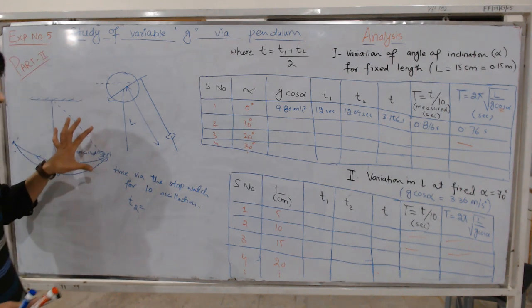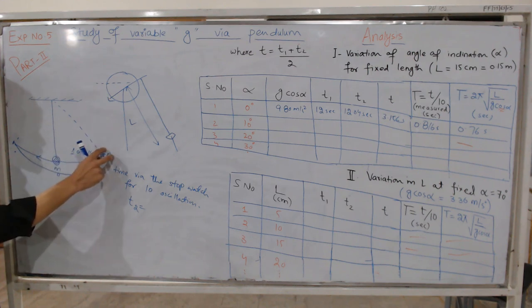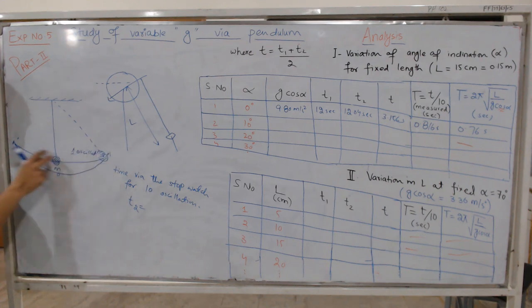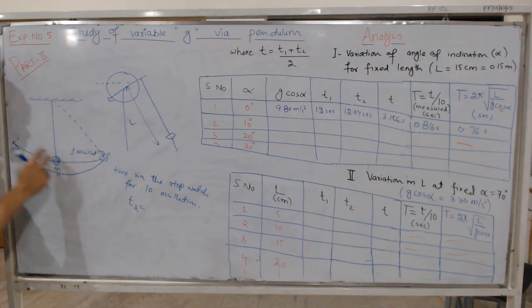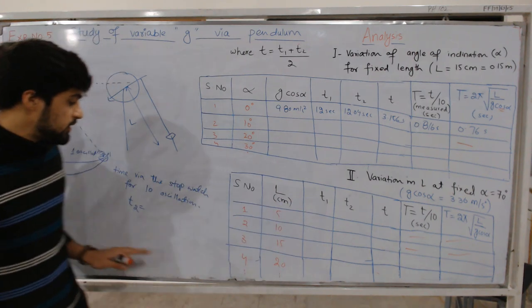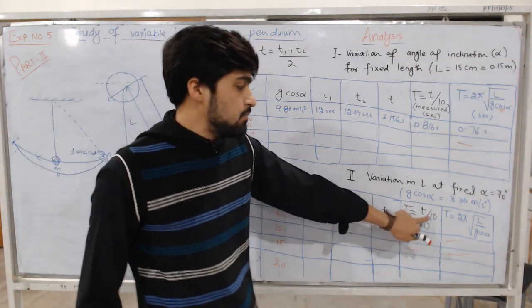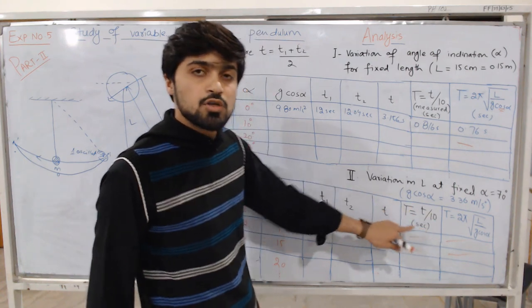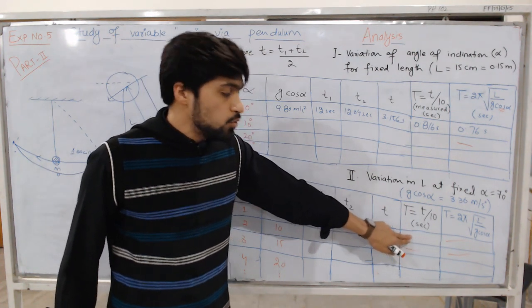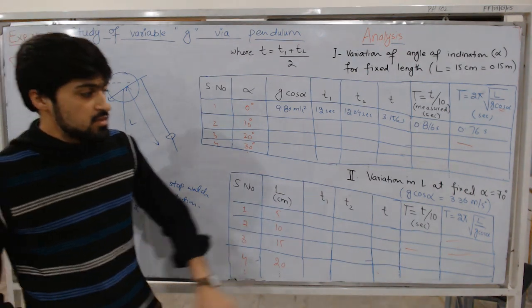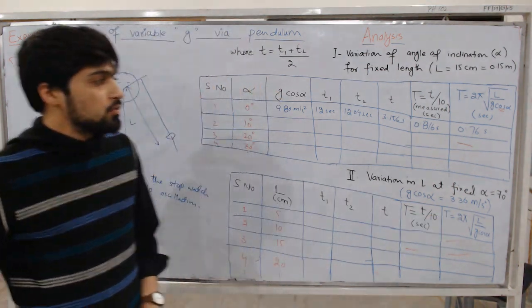To measure T1 for 10 oscillations, move the bob to point A, release it. It will move from A to A dash and as it comes back to A that is one oscillation. Note the time for 10 oscillations to get T1. Repeat for T2. The average of T1 and T2 gives the mean time. Divide that mean time by 10 to get the time period — this will be your measured time using the stopwatch. The other time is calculated using the relation for the variable g pendulum.